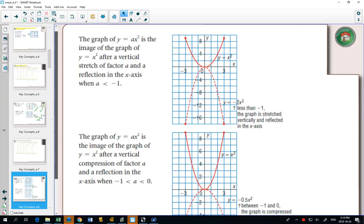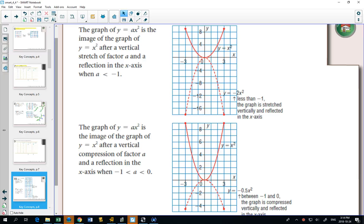And the last thing we noticed is if the a value is negative, it flips it down. So if you have a negative, your graph goes down instead of going up.